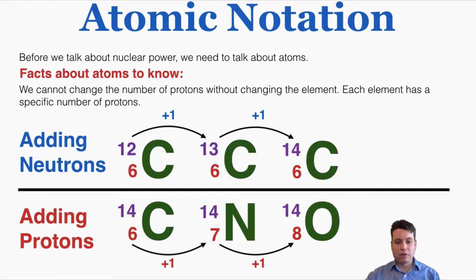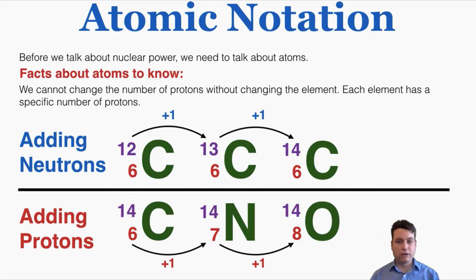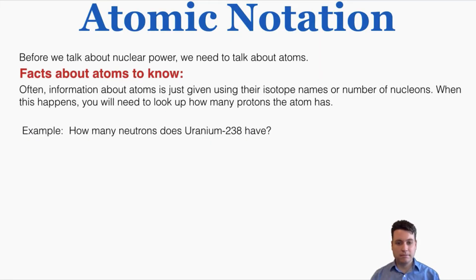You can see that as we go from six protons to seven to eight, we go from carbon to nitrogen to oxygen. In that lower picture, I'm keeping the number of nucleons the same, which actually means subtracting one neutron for every proton I add to keep it at 14. This shows that keeping nucleons the same does not keep the element the same — if you change the protons, you change the element.